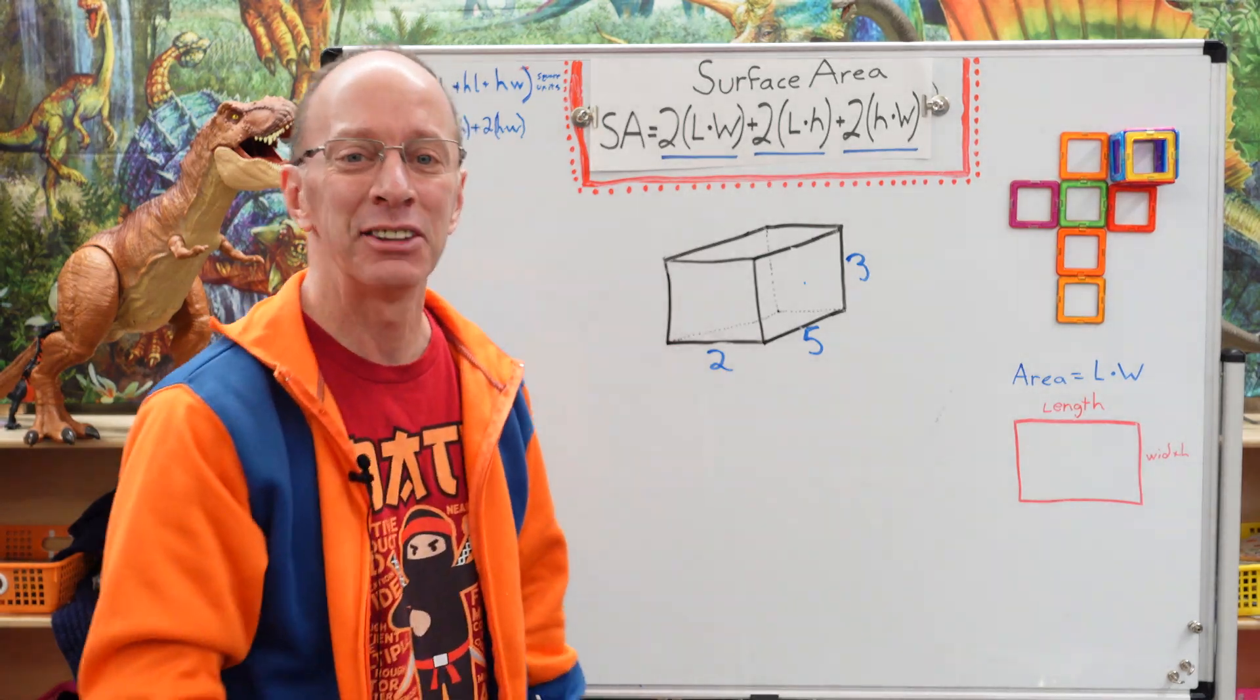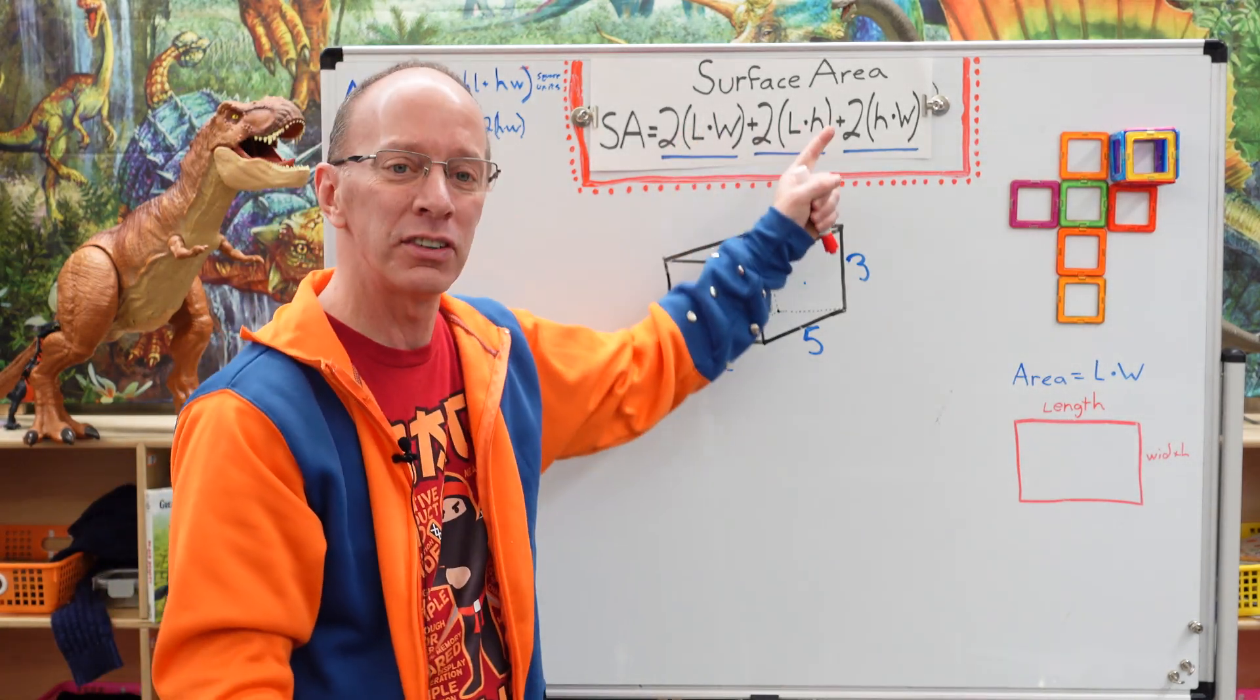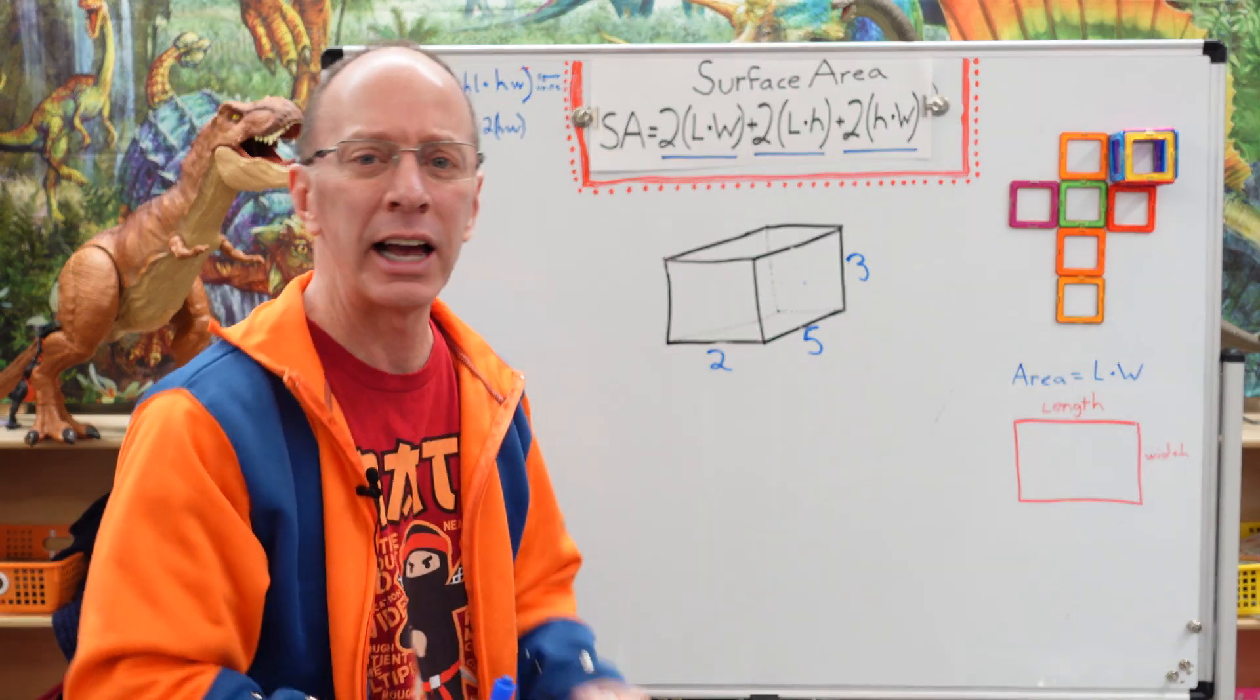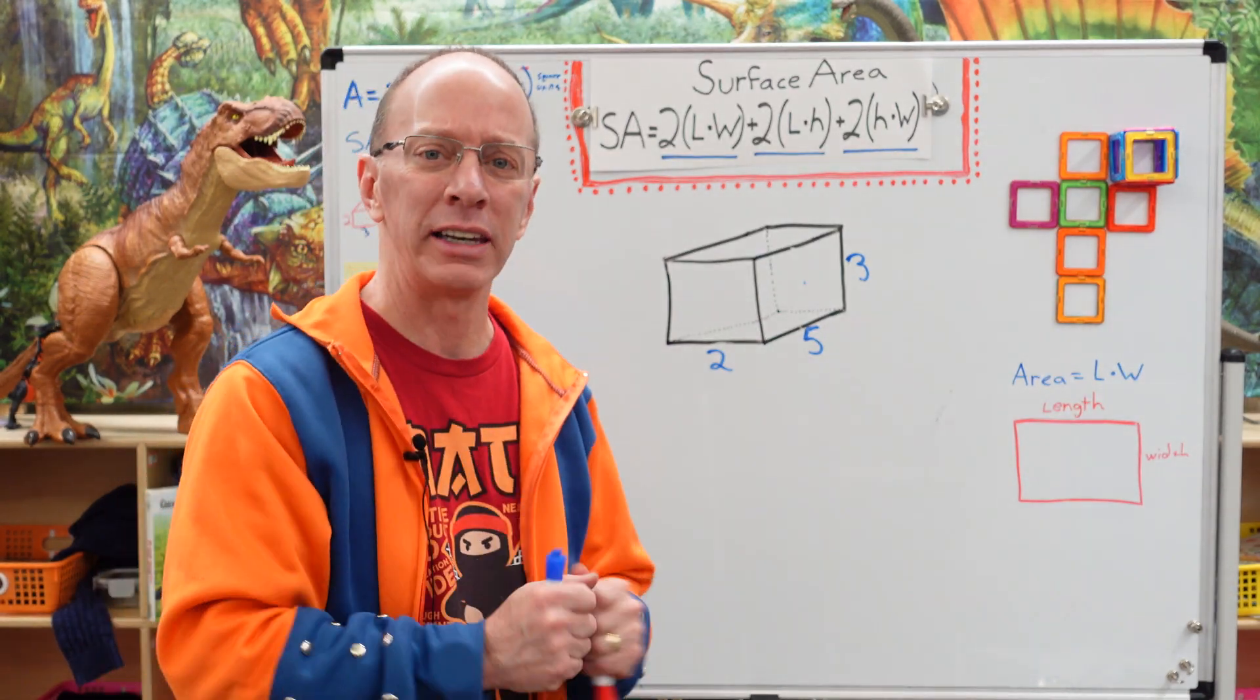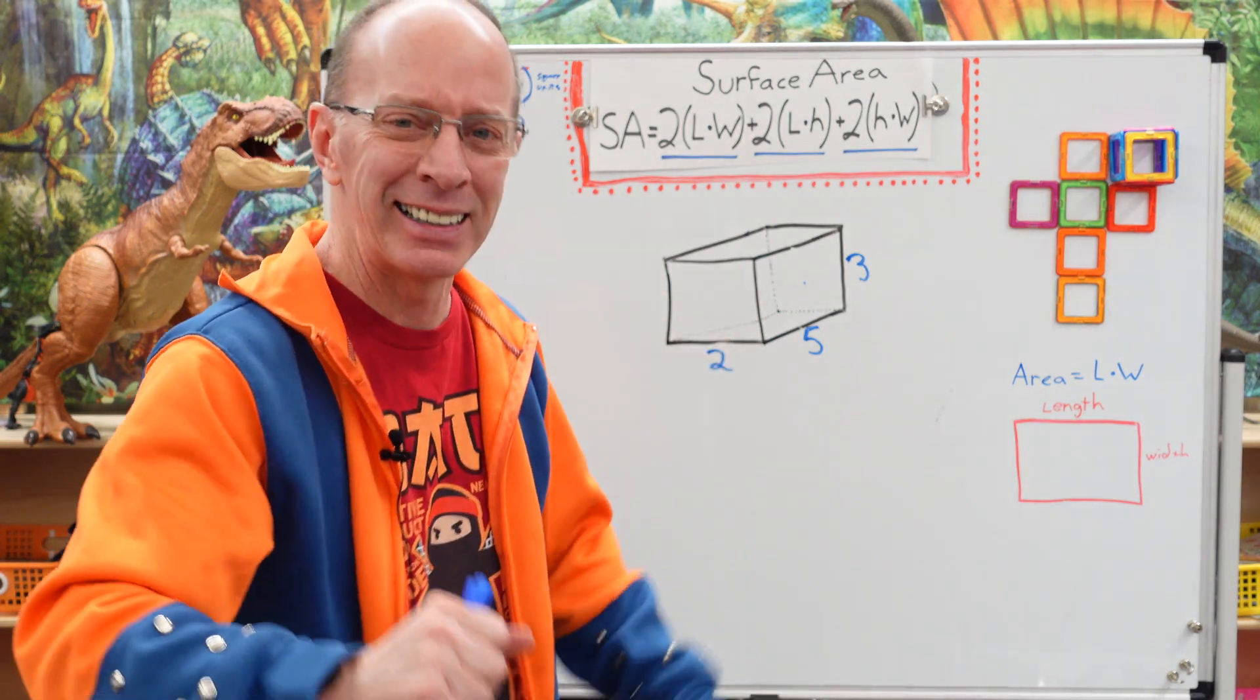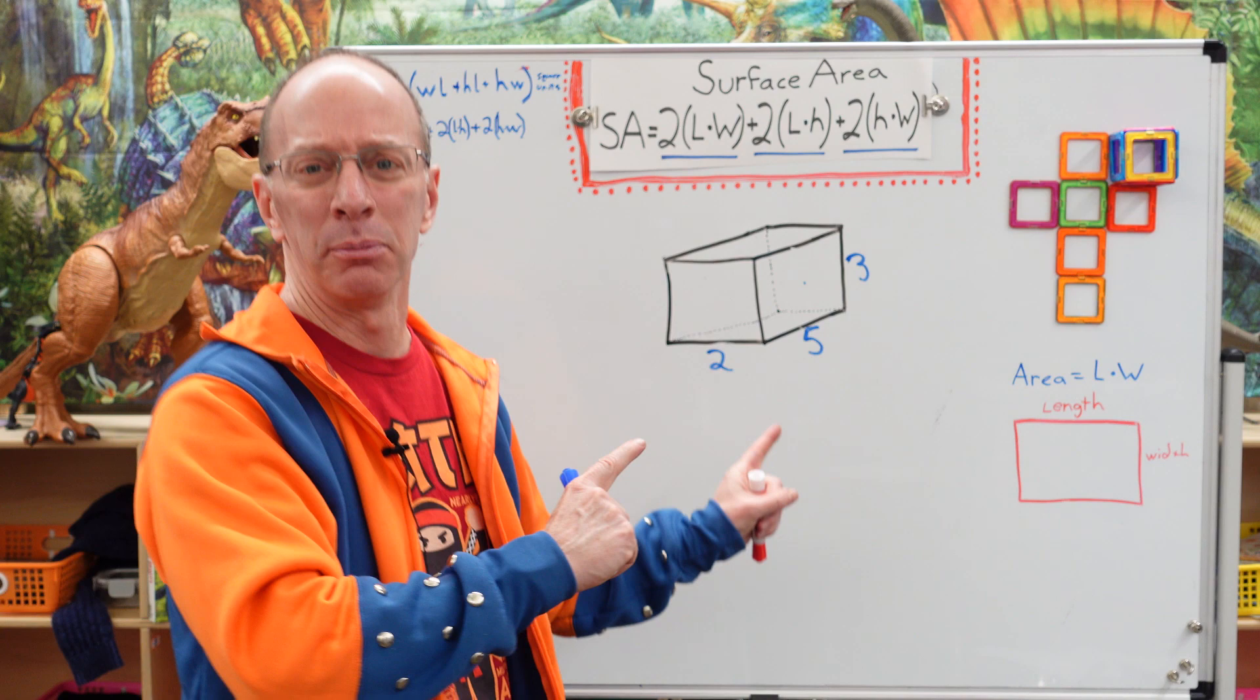Hey, welcome to the show. Today on the show, we are going to find the surface area of a rectangular prism. But before we do that, I want to ask you a question. What do you call an empty parrot's cage? A polygon. All right, I'll stick to the mathematics.